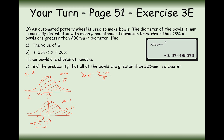Plug the values in: minus 0.6745 equals 200 minus mu divided by 5. Rearranging — multiply by 5, then do 200 minus the result — we expect a value bigger than 200. The answer is mu equals 203.4, which is the answer to part A.